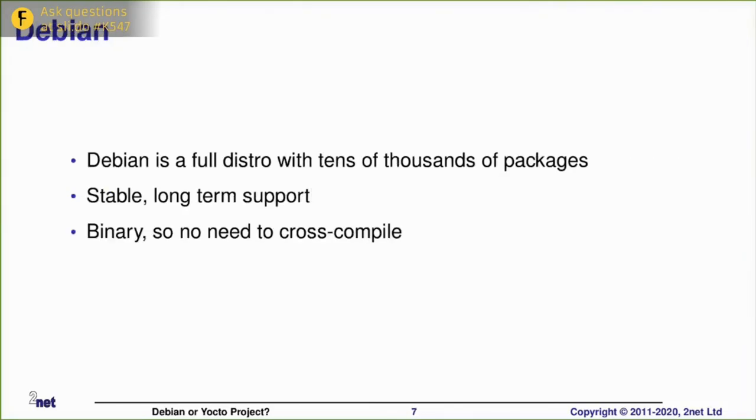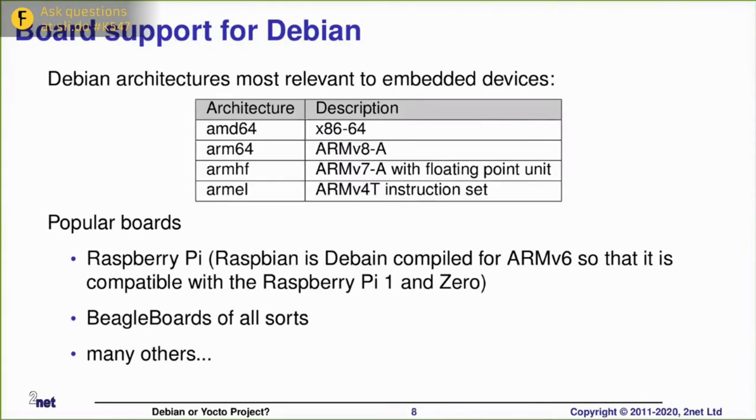So let's look at Debian first of all. Debian is a full distro. It's been around for a long time. It has many, many tens of thousands of packages. It has a good support infrastructure. And it comes as a bunch of binaries. So you don't need to mess around cross compiling stuff. You just install the packages you want and you are up and ready to go very quickly.